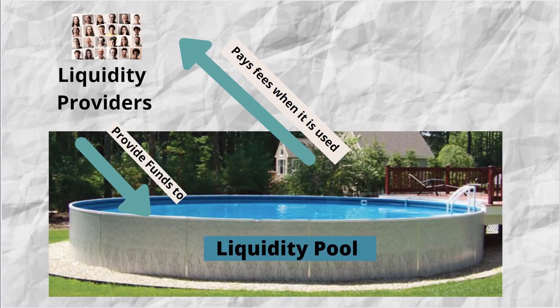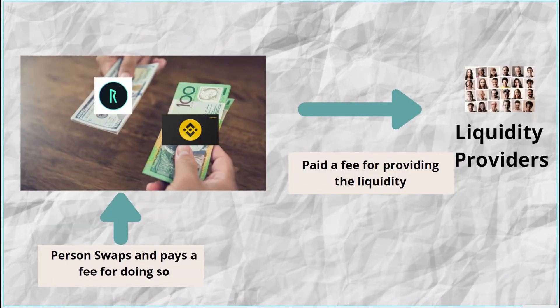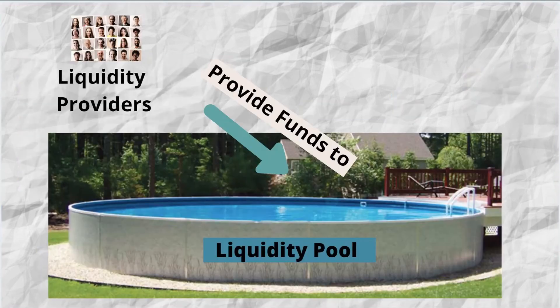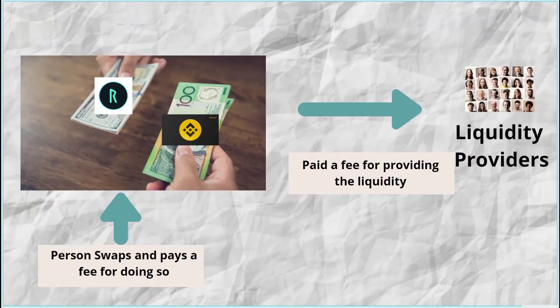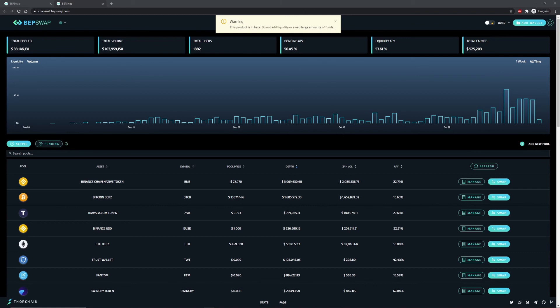Liquidity providers stake their assets to get fees from people who want to swap assets. Like with the local currency exchange, a person swapping their assets incurs a fee, which is passed on to the liquidity providers. If their contribution makes up 40% of the depth of the pool, they are like 40% of the exchange and would receive 40% of the fees. In other words, people can use BEP Swap to swap one BEP2 asset for another — for example, swapping RUNE to Binance Coin — and the people who provide the liquidity get to take the fee.